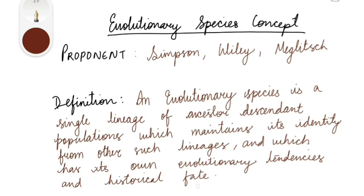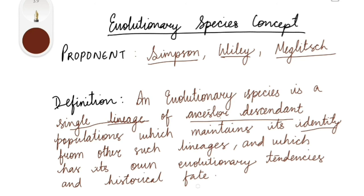The evolutionary species concept was proposed by Simpson, Wiley, and Meglitz. Simpson defined it as: 'An evolutionary species is a single lineage of ancestor-descendant populations which maintains its identity from other such lineages and has its own evolutionary tendencies and historical fate.' This concept avoids many problems of the biological species concept — particularly, it accounts for asexual reproduction, which the biological concept did not consider.